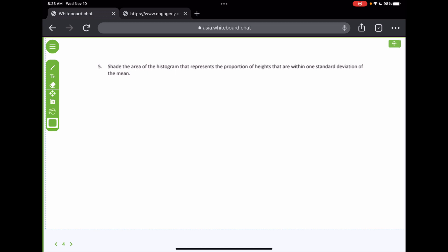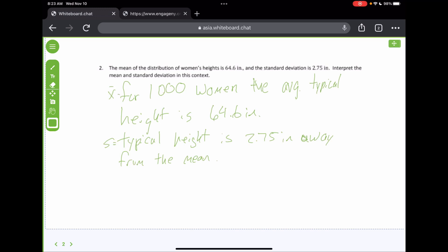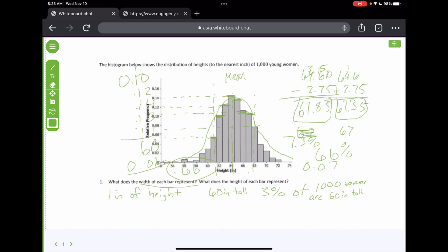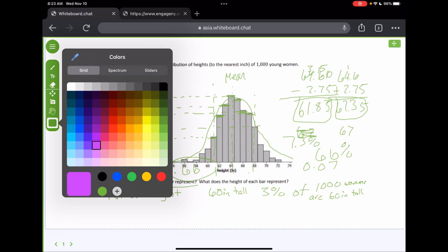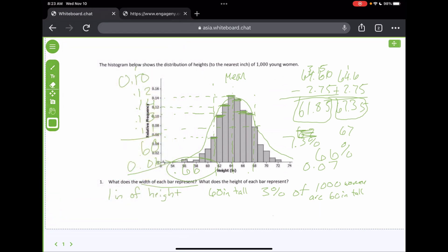All right, all right page four number five says shade the area of the histogram that represents the proportion of pots that are within one standard deviation of the mean. Well since we have already drawn in that now all we have to do let's find another color and make it perfect okay. And we'll just shade this in. There we go that's all you have to do.